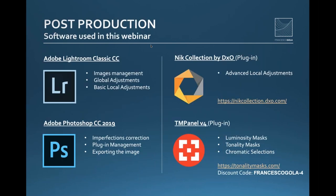Regarding software, we'll use Adobe Lightroom as the primary post-production tool, then Adobe Photoshop and a couple of plugins. One is called Nik Collection — you can find the link in this chart — and the other is TM Panel, available at another link, with a discount code if you're interested in purchasing it. The idea is to use Lightroom for basic adjustments and then move to these plugins for more advanced local adjustments and greater control over the image.